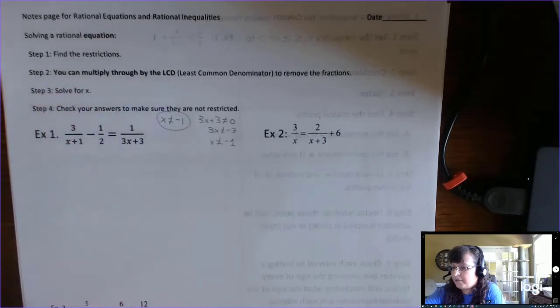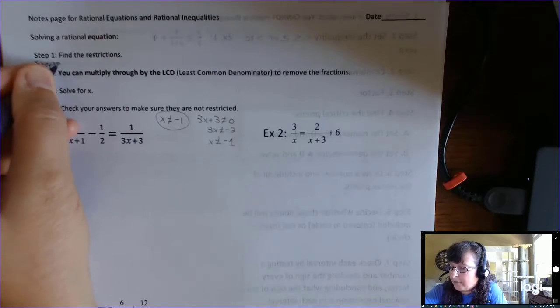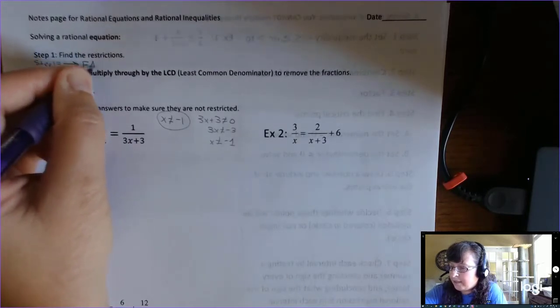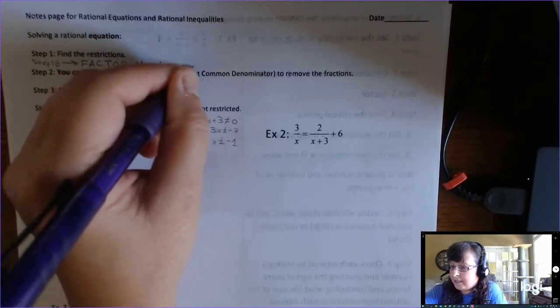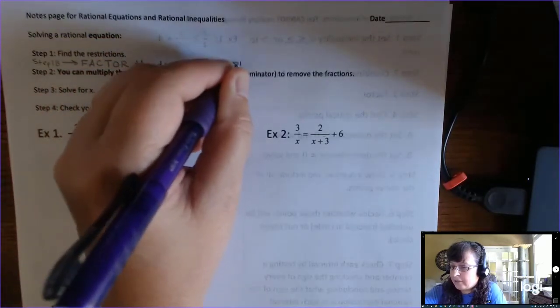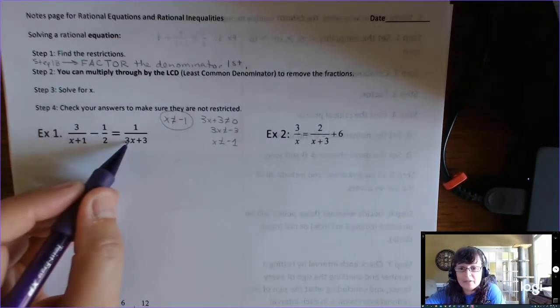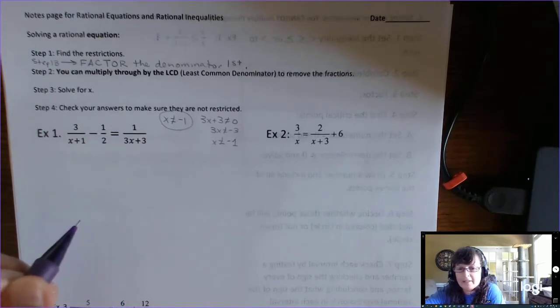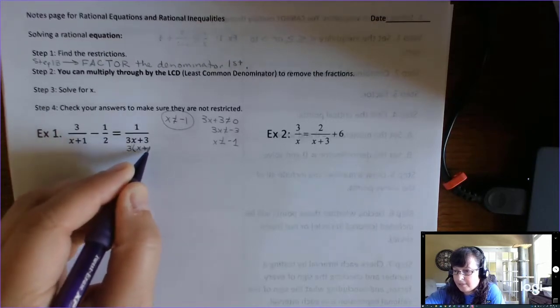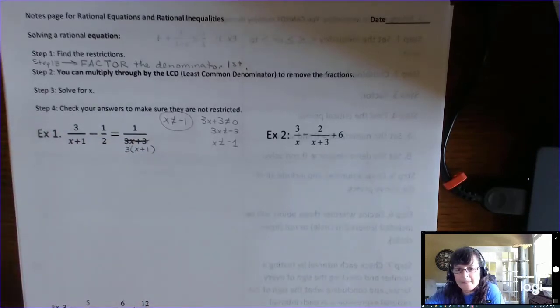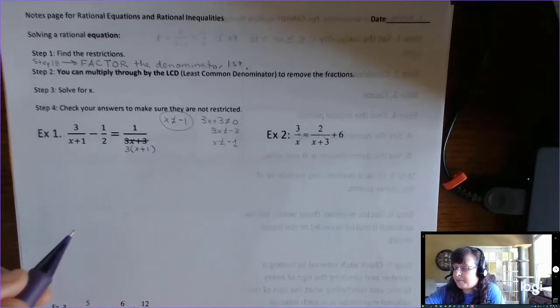Step two, you can multiply through by the LCD. Now I should put a step 1b right here. You have to, as you may have guessed, you have to factor the denominator first if you can. So let's add that. Because these two look like different factors. x plus 1 and 3x plus 3 are not the same. But you can pull a GCF of 3 out of here. So if you pull a 3 out, this becomes 3 times x plus 1. So these are not different factors. Okay? There's an x plus 1 in this one.